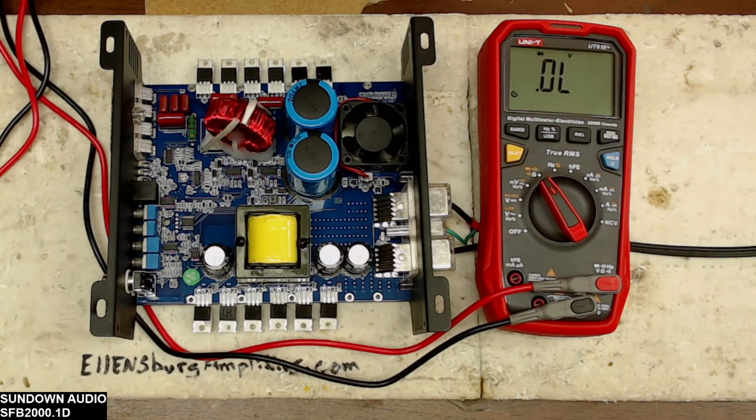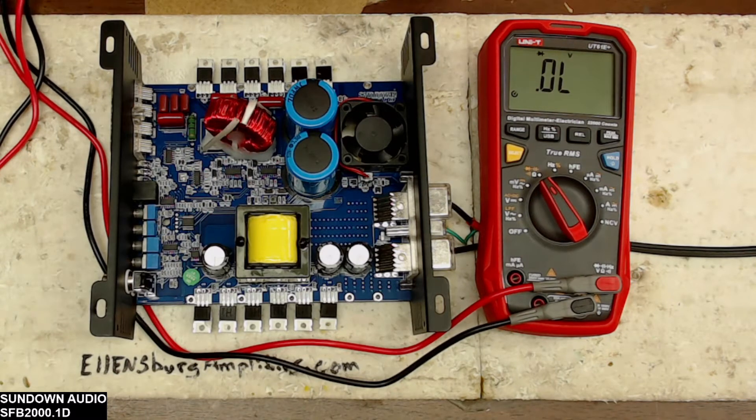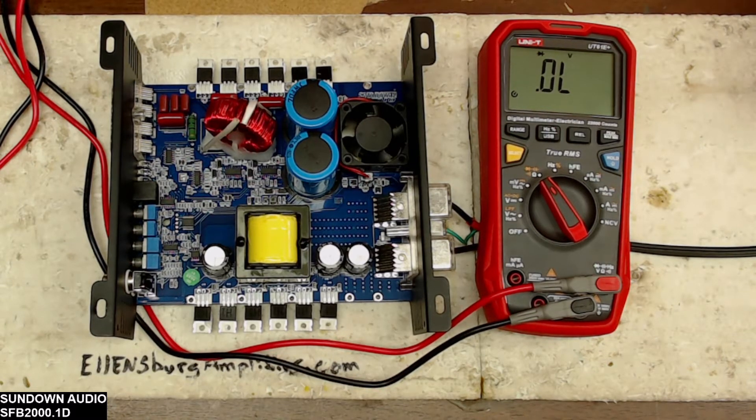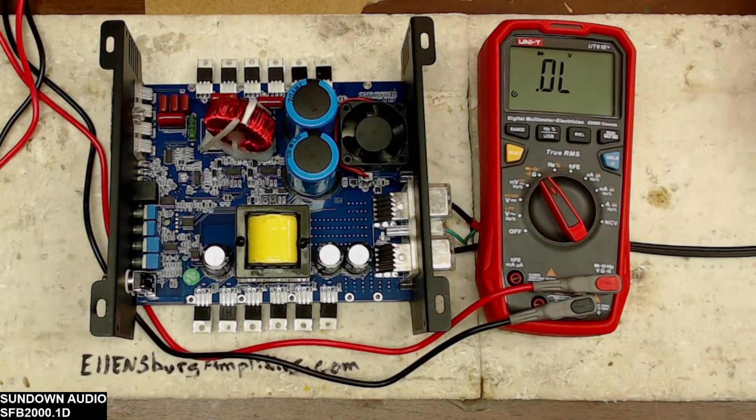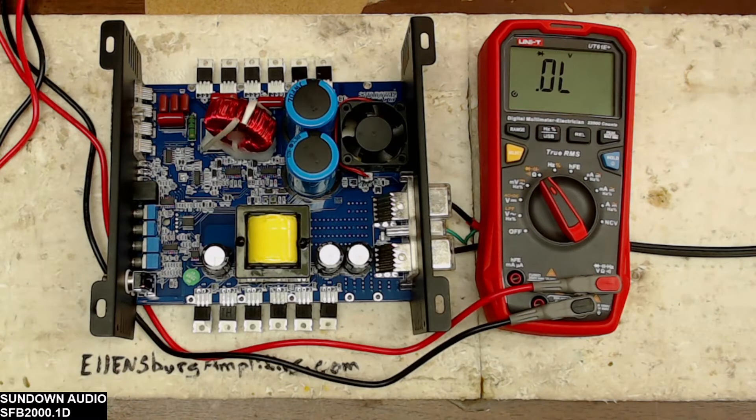What I have here is a Sundown Audio SFB 2000.1 class D amplifier. This amplifier belongs to Daniel, a local guy here in Washington who sent it in for repair. He states that the push terminals on the sub box got hot and melted, which then caused the positive and negative terminals to touch.